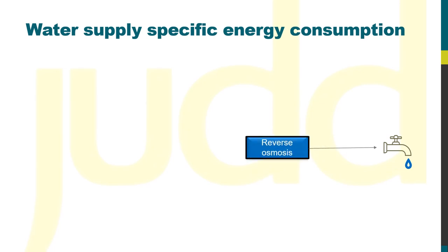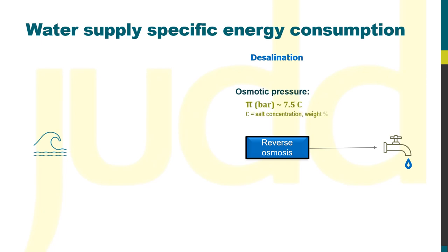RO is the favoured technology for seawater desalination based on energy consumption. Whilst RO energy efficiencies have improved over the years, the lower limit of energy consumption is imposed by the seawater's salinity. The pressure required to pass water through the membrane relates to the water osmotic pressure, which is proportional to the salt concentration. This makes it practically challenging to get the specific energy consumption (SEC) down below about 3.3 kWh per metre cubed permeate product for a normal seawater feed, once pressure losses and other factors are taken into account.